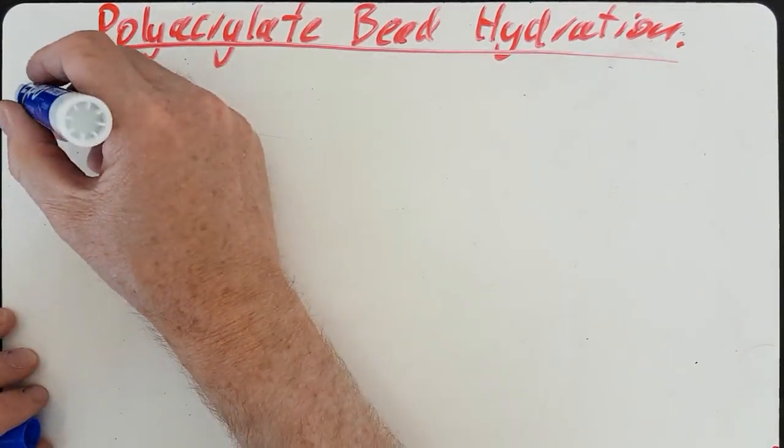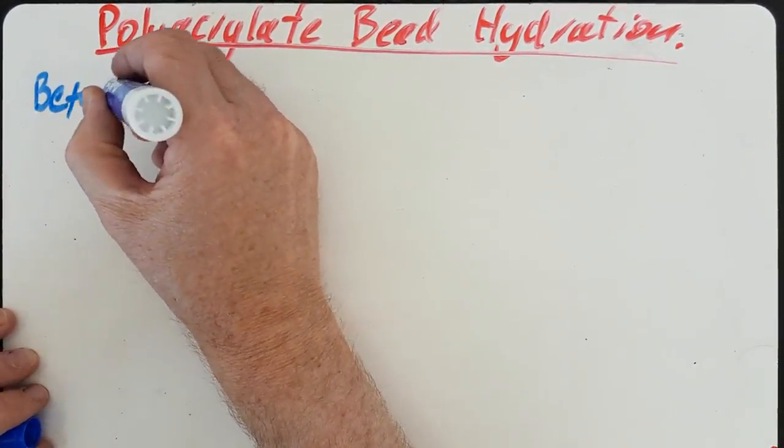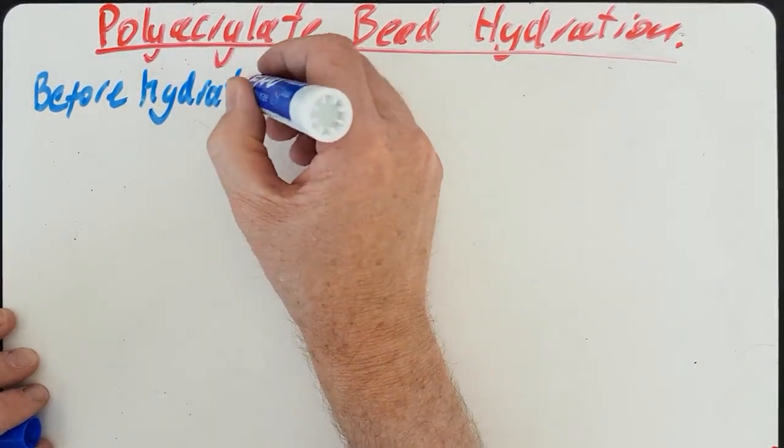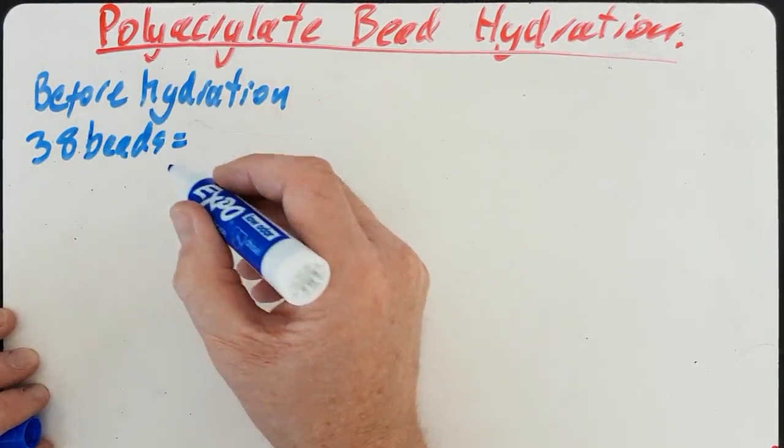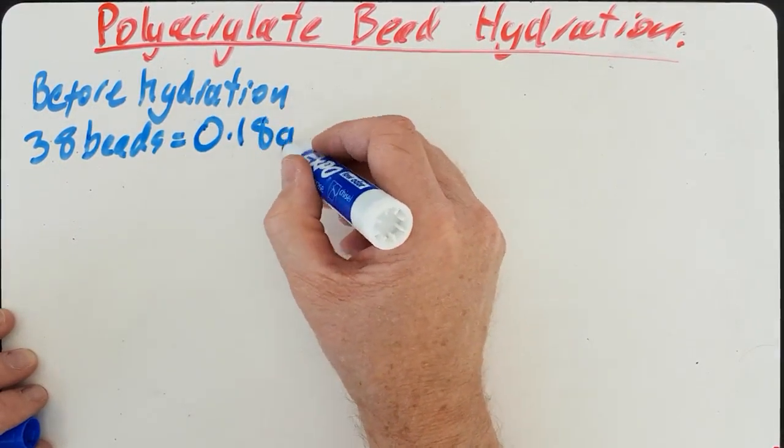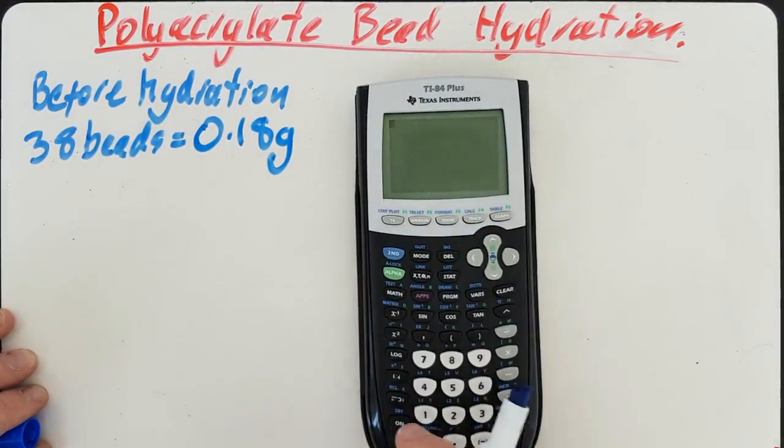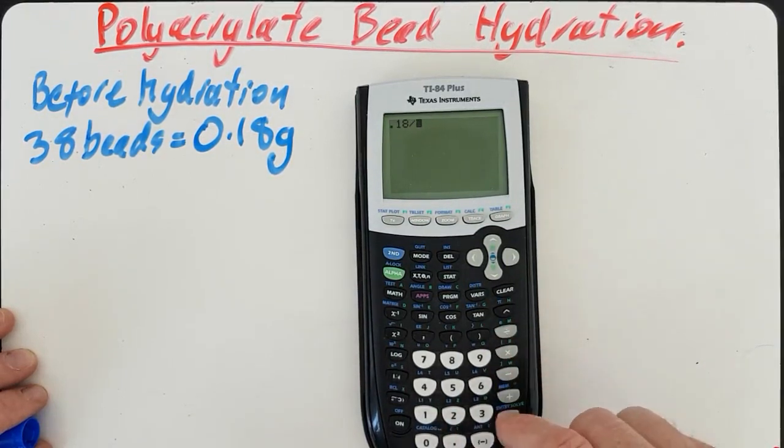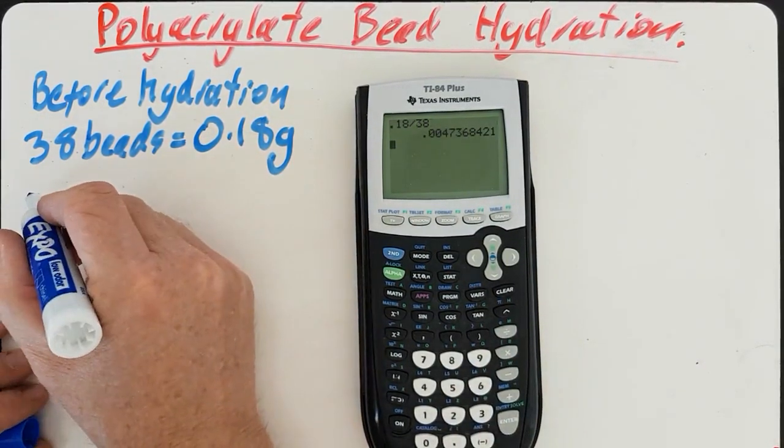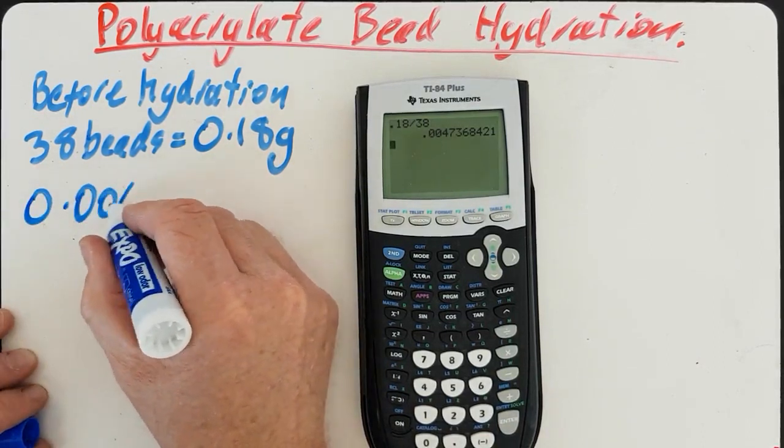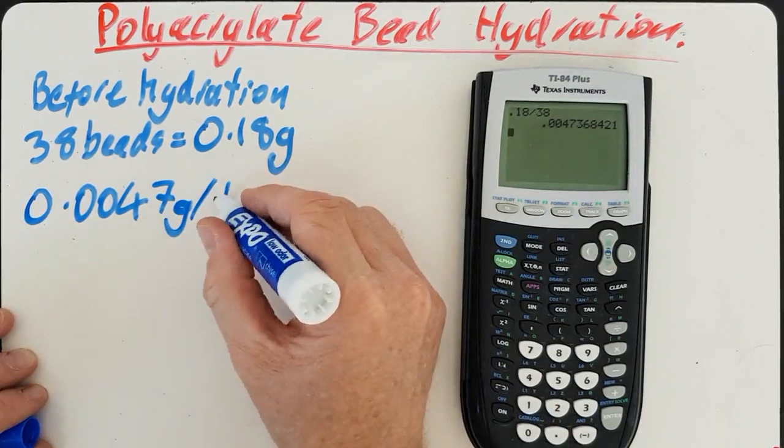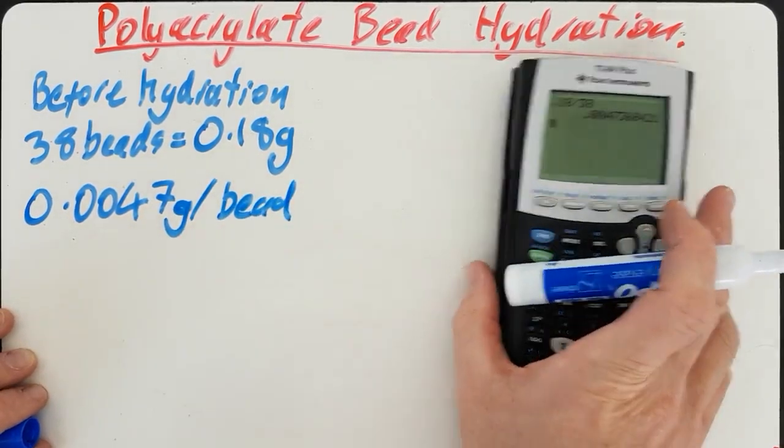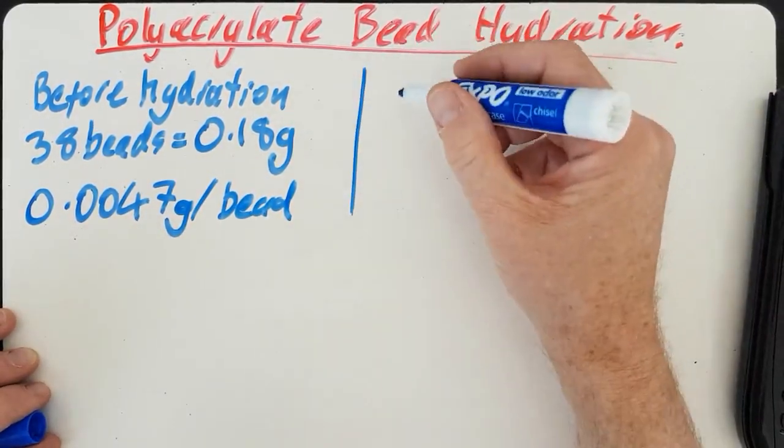Okay, let's crunch some numbers. First of all, let me put down the raw data. So before hydration, I massed out 38 beads with a total mass of 0.18 grams. A simple division gives me 0.0047 grams per bead. I also dropped a whole bunch on the floor. I feel them under my feet even after sweeping.